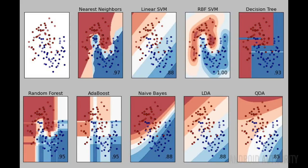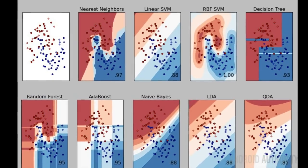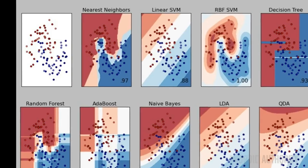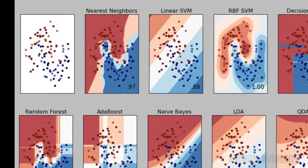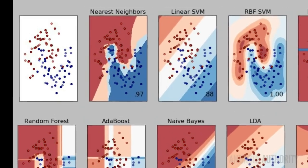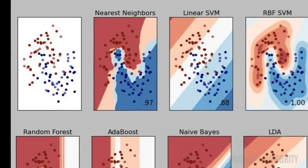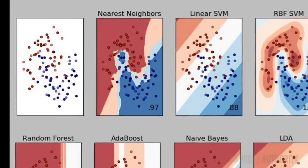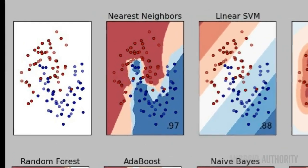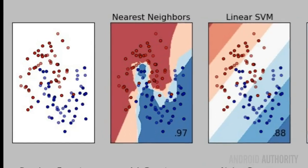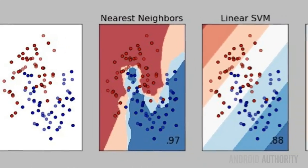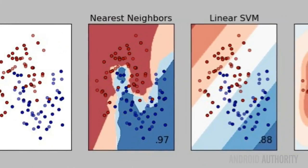Take a look at this diagram. The picture on the top left is the data set. The data is classified into two categories: red and blue. The data is hypothetical, but it could represent almost anything — coin weights and their diameters, or the number of petals on a plant and their width. Clearly there are some definite groupings here.